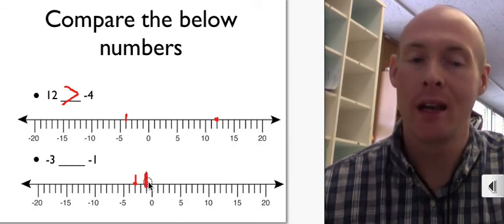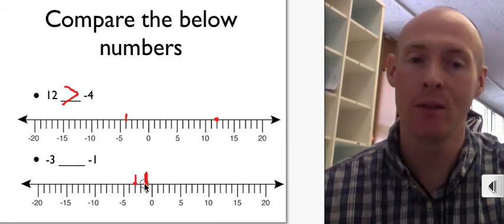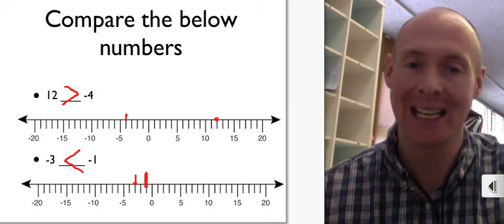Negative 3 and negative 1. Which one is more to the right? Well, negative 1 is. So therefore, negative 3 is less than negative 1.